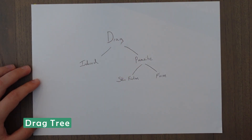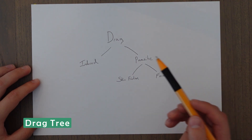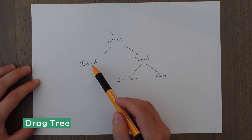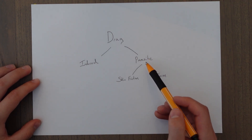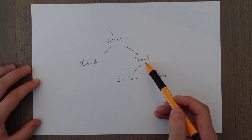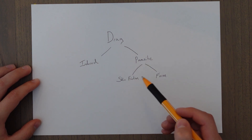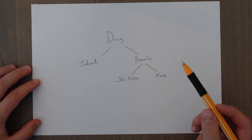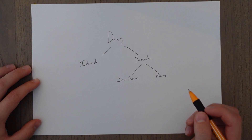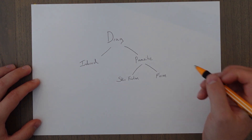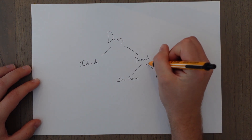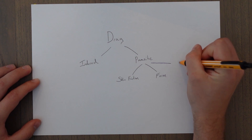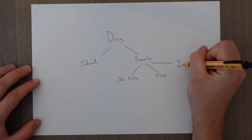When defining drag before, we split it into induced drag and also parasite drag, which consists of skin friction and form drag. Parasite drag also contains another subdivision which we'll add in now, which is known as interference drag.